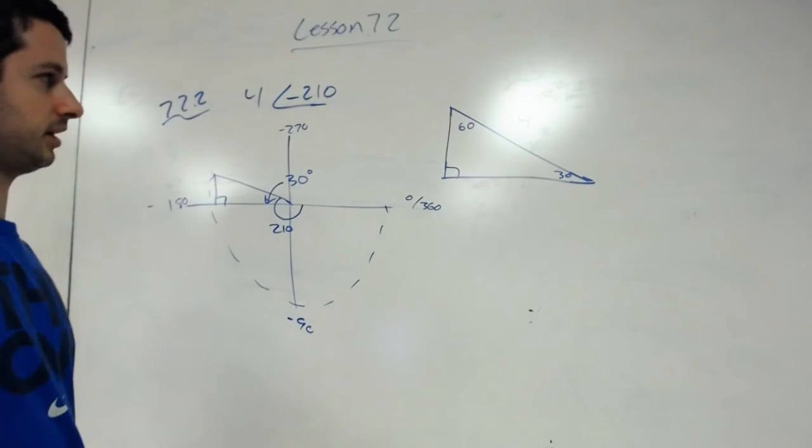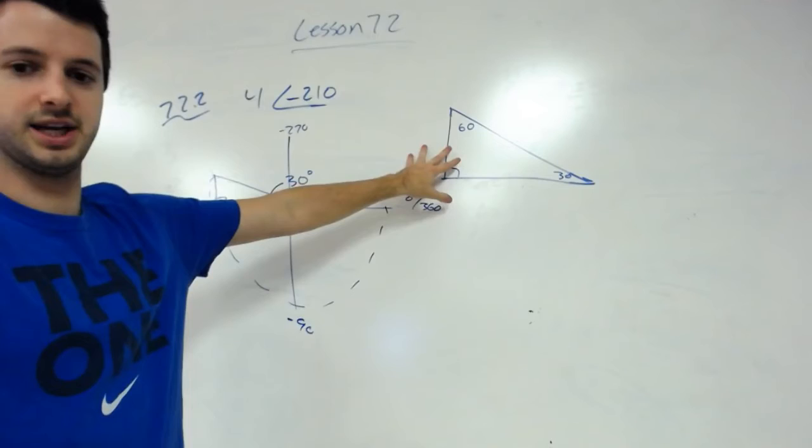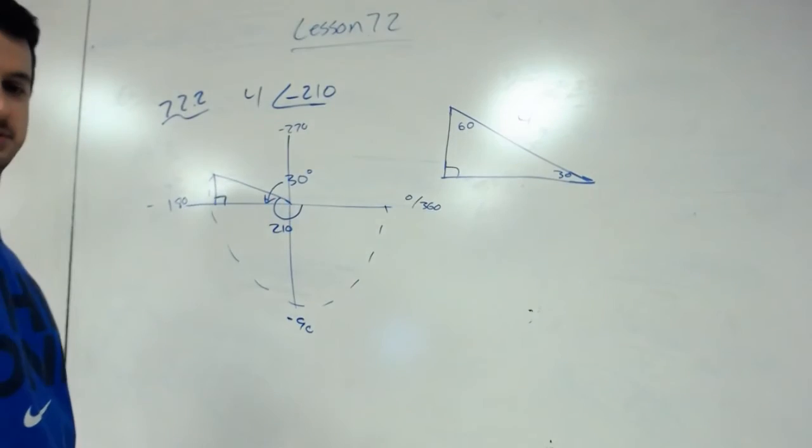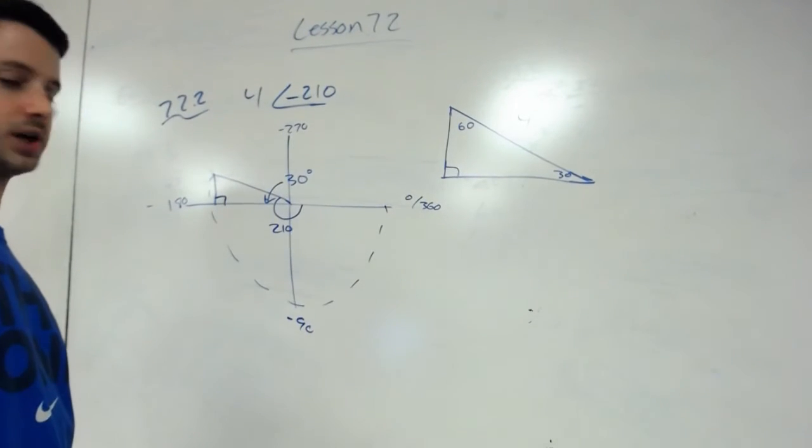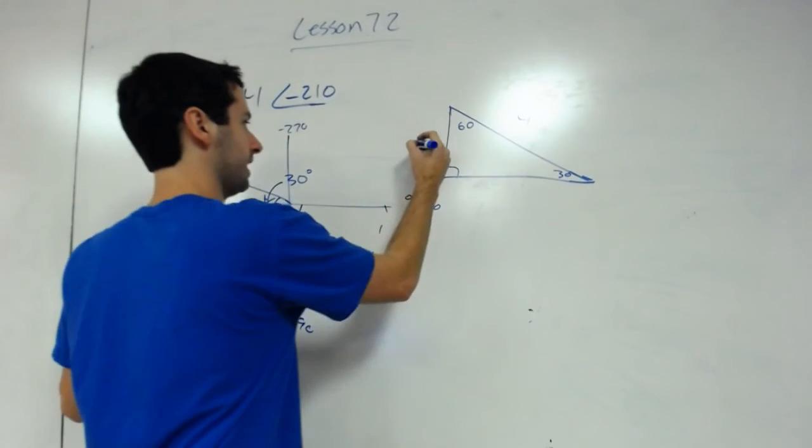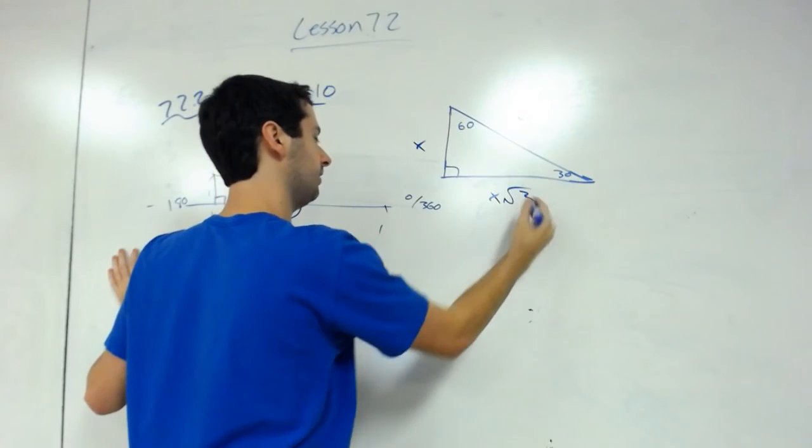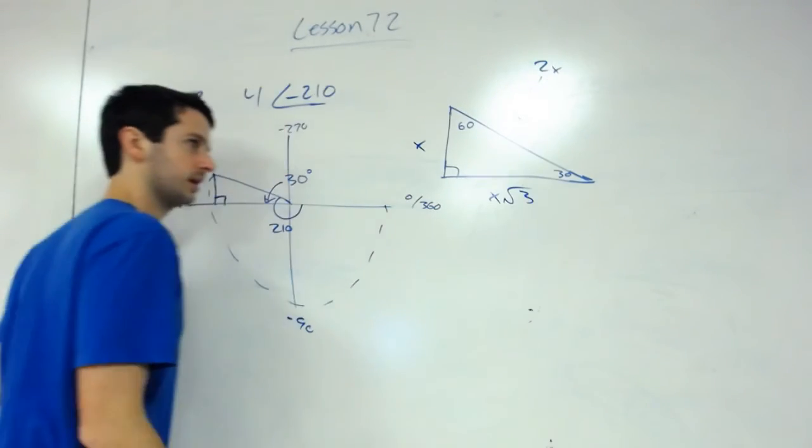More often than not you're probably going to have to use sine, cosine, or tangent and the inverse in order to find the legs of the triangle. But you should know how to do that by now, so we're just going to use the 30-60-90 triangle principles. The short side is always x, the long side, the 60 degree side, is always x radical 3, and the hypotenuse is always 2 times x.